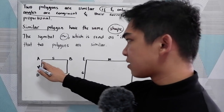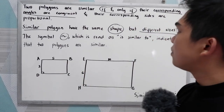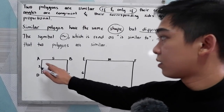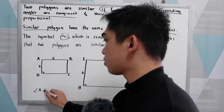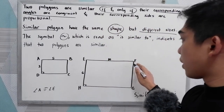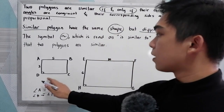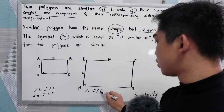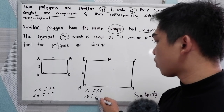all angles measure 90 degrees. So angle A is 90, B is 90, C is 90, D is 90. Now we're going to find the corresponding angles. Angle A corresponds to angle E, so angle A is congruent to angle E. Angle B is congruent to angle F. Angle C is congruent to angle G. And angle D is congruent to angle H.